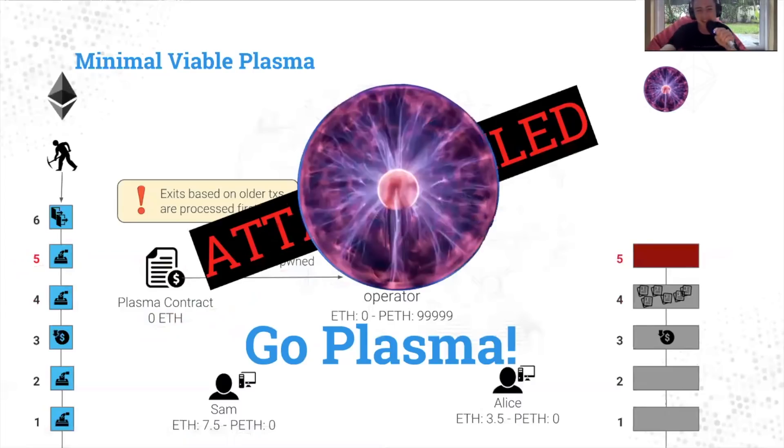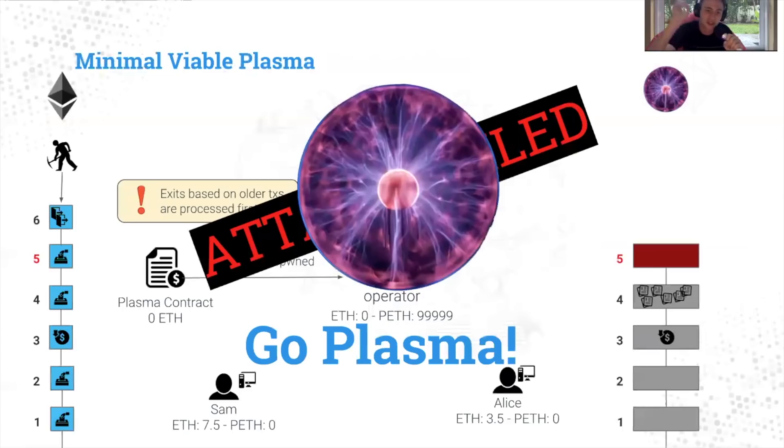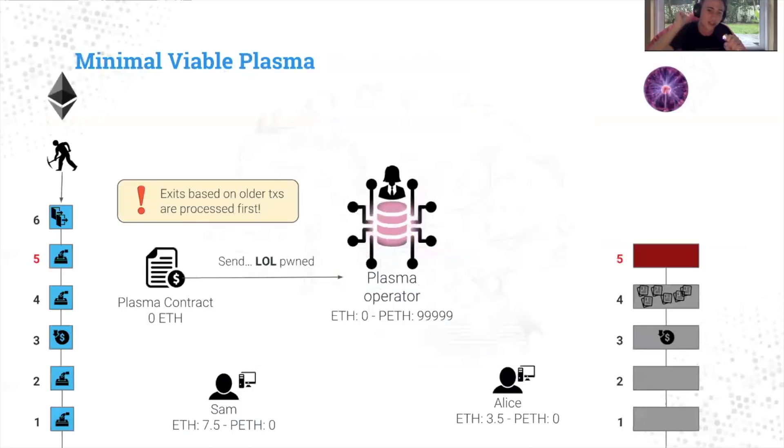So this was a quick overview of Plasma MVP and focuses on some things that you'll note are there's a central operator, but that central operator is constrained and unable to steal any money because all of these cool mechanisms. So thank you everyone. Hopefully that was helpful. Have a lovely day.